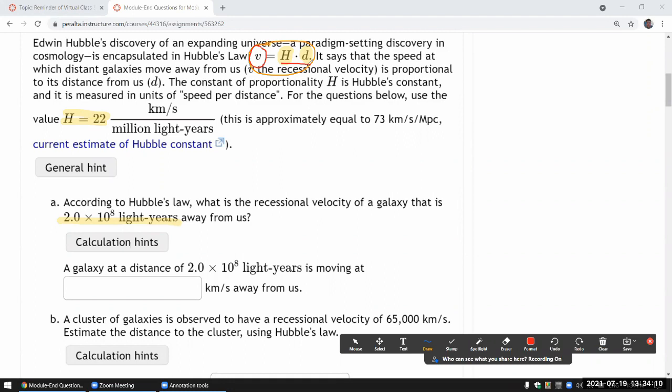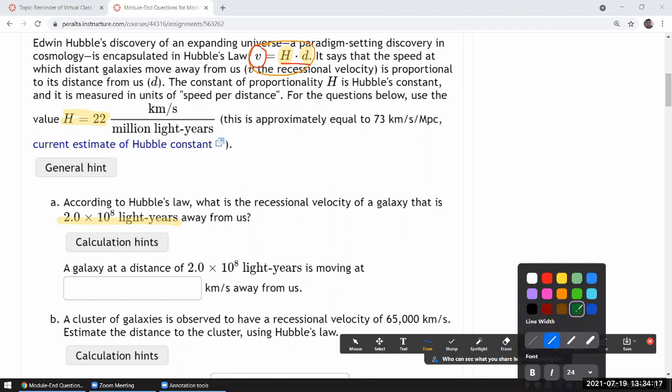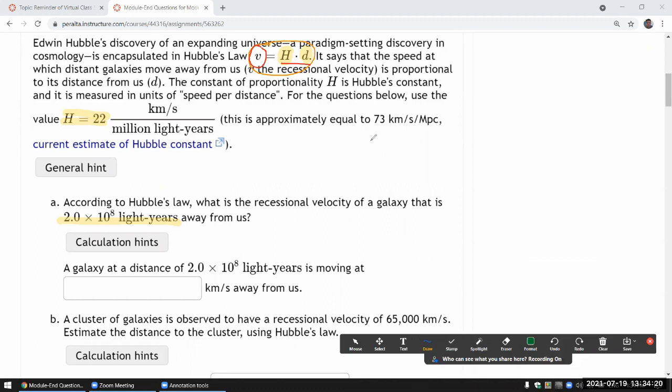So let me write out the calculation that we are doing and highlight the unit issue. So what I'm trying to do now is just multiply Hubble constant with the distance. So doing this calculation, Hubble constant times the distance. Let me just write down that Hubble constant, which has a number and it has a unit. I want you to pay attention to that. Kilometer per second per million light years. And that million is important. Times the distance, we are given this distance here. 2 times 10 to the 8 light years.